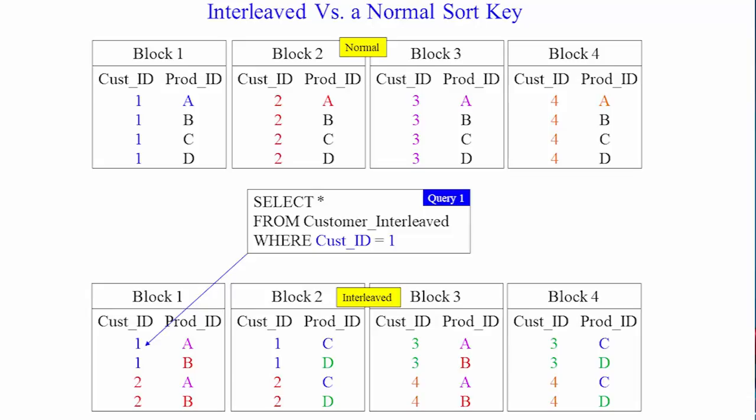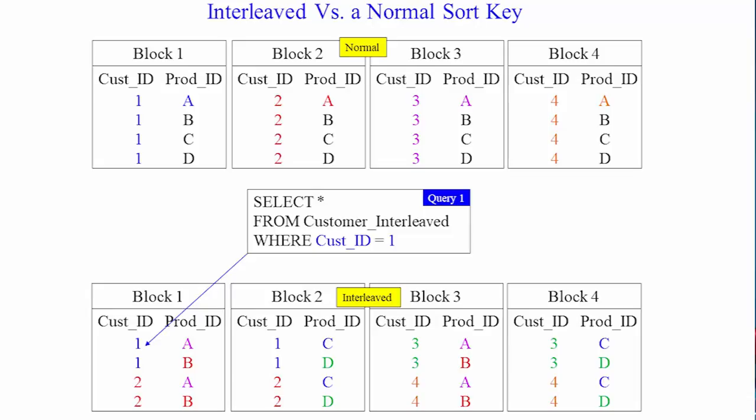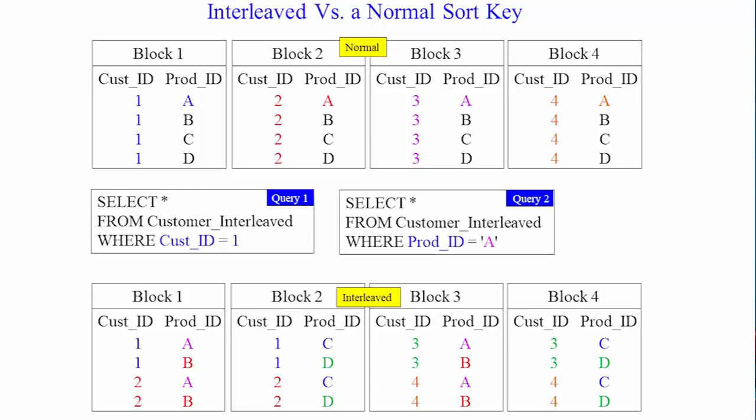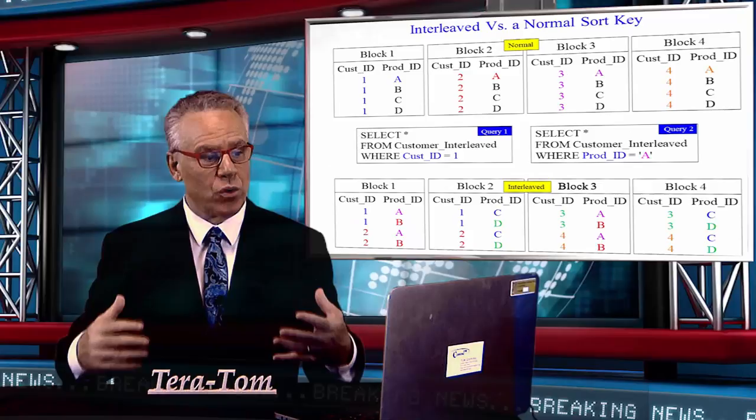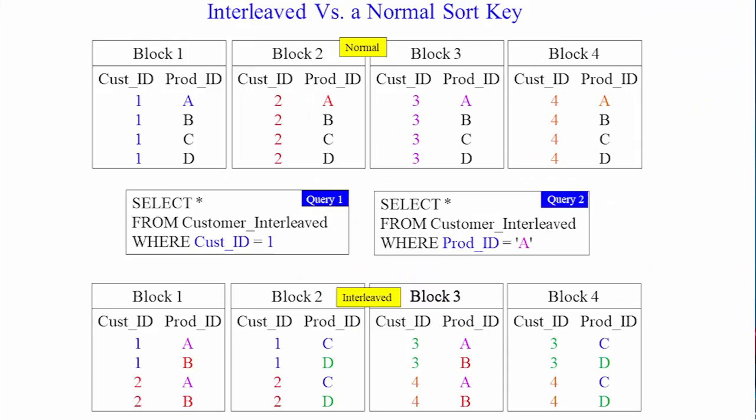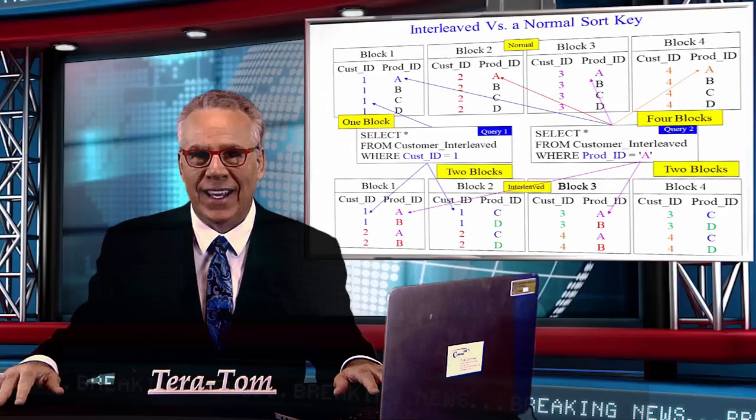So, we're burned a little bit there. But, when we say select everything from customer interleaved, where prod ID equals A, it doesn't have to read four blocks. It's only reading two. That's really where you can decide whether you want to sort by a single sort key, multiple sort keys, or you want to do interleaved, where they give equal value to all of the columns in that interleaved sort key.